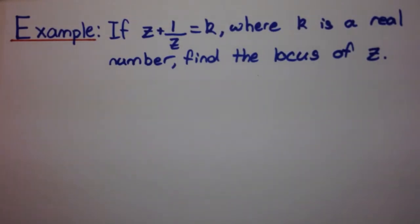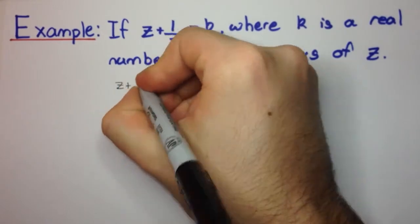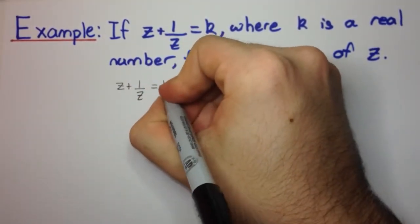Okay, so the way to do this question is we need to deal with this expression here and try and simplify it a little bit and get z equals some expression. So we have, let's just write this again, z plus 1 over z equals k.